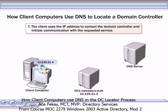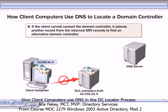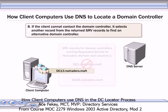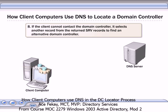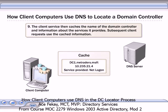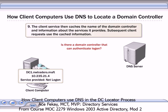The DNS server returns the host record for that domain controller, which contains the domain controller's IP address. The client uses the IP address to contact the domain controller and initiate communication with the requested service. If the client cannot contact the domain controller, it selects another record from the returned SRV records to find an alternative domain controller. The client service then caches the name of the domain controller and information about the services it provides. Subsequent client requests for the same service use the cached information.